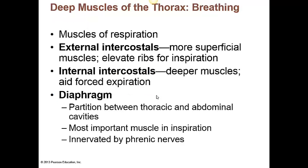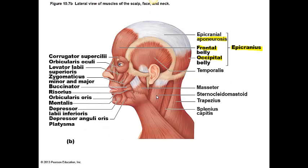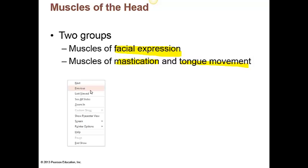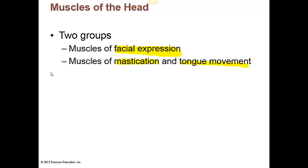Before we move on to the thorax, let's review a couple of the other important muscles you need to know for facial expression. These include the epicranial muscles, the muscles of mastication, and tongue movement. Let's go through table 10.1 in your textbook and highlight the main ones. The epicranius should be recognized as being made up of two different muscles: the frontalis and the occipitalis.